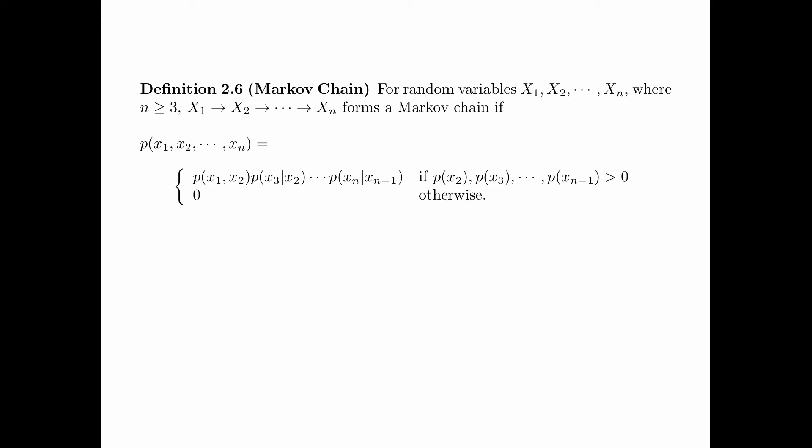Definition 2.6 is the definition of a Markov chain. For random variables x1, x2 up to xn, where n is bigger than or equal to 3, x1, x2 up to xn forms a Markov chain in this order.